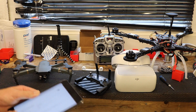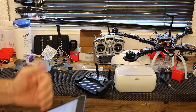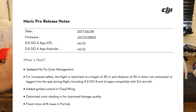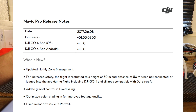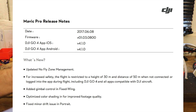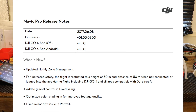We're talking about this new safety restriction DJI have included, which is written as follows: 'For increased safety, the flight is restricted to a height of 30 meters and distance of 50 meters when not connected or logged into the app during flight, including DJI GO 4 and all apps compatible with DJI aircraft.' So what do they mean by this?